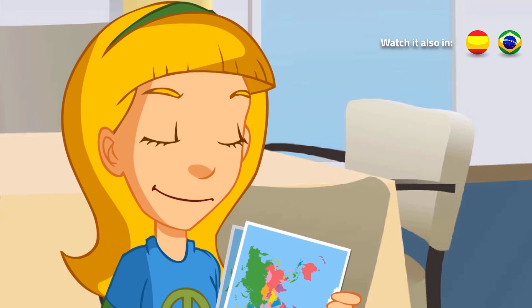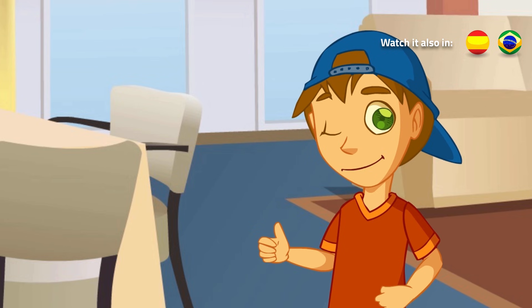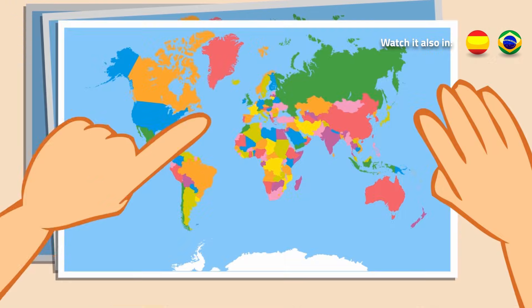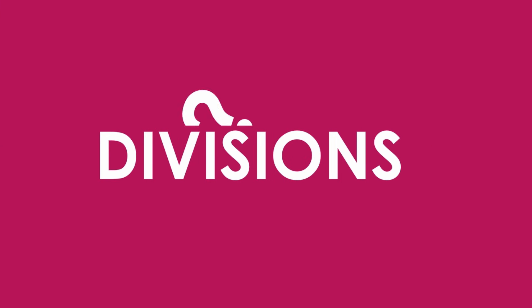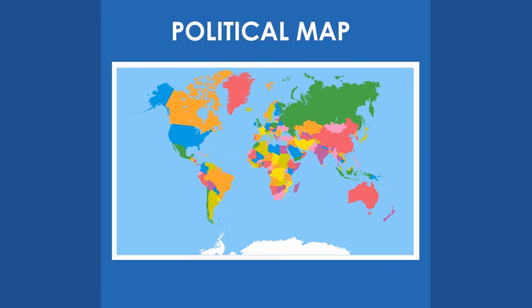Look, I've got some maps here. Shall we look at them? Yes, let's look at them. This is a political map of the world. There are dividing lines on this map. What are they? Those are lines that separate one country from another.